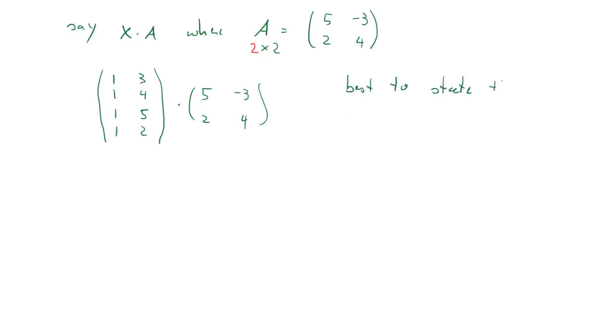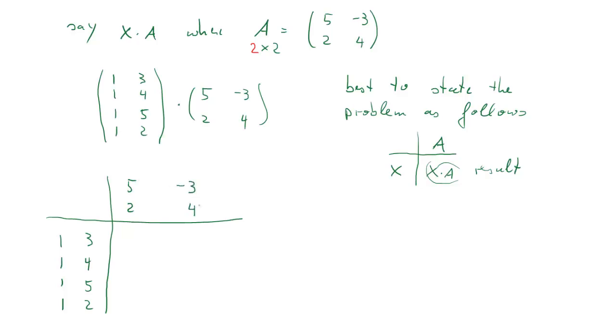The easiest way to do that is to state the problem in a visually slightly different way. I will produce a little cross and we'll put the X in the lower bottom element, the A in the upper right element, and then the result X times A in the bottom right element. Here, bottom left element is X, top right element A. We'll leave a little bit more space between the columns.